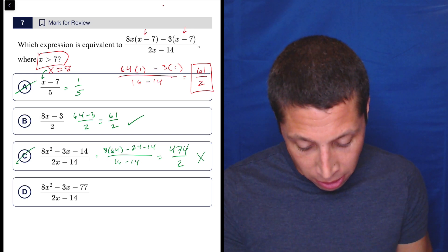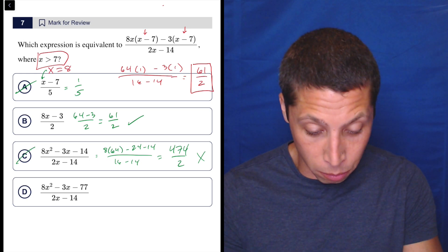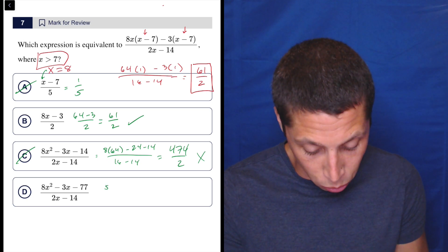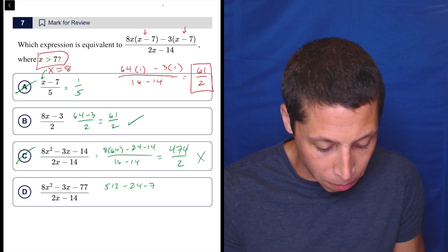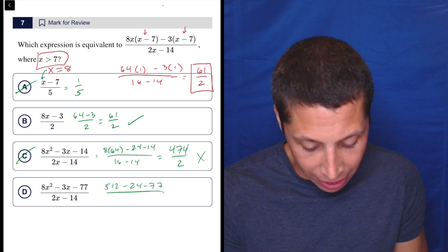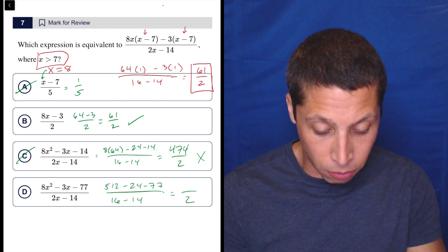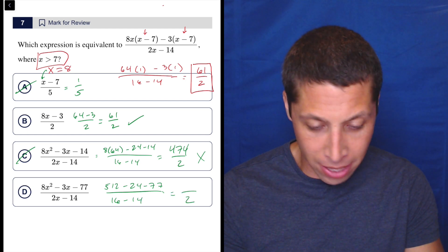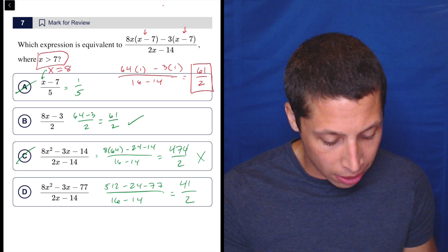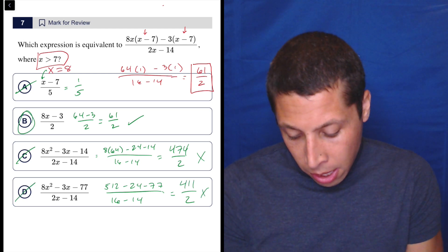Then we can do the same thing here. We have eight times 64. We can do that one already. That's 512 minus 24 minus 77 over again, 16 minus 14. So we have the two. So 512 minus 24 minus 77. Again, I think it's way too big. Yeah. 411. So that's that.